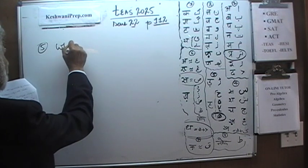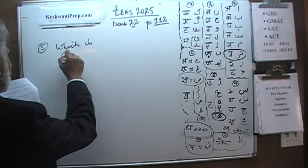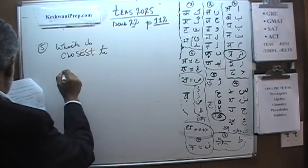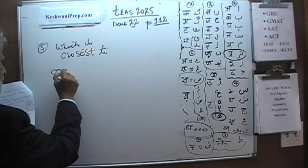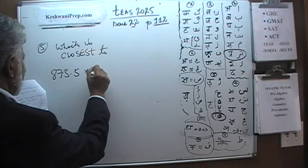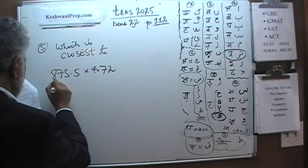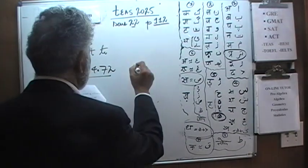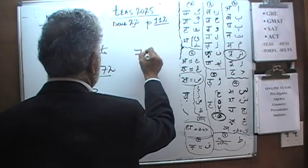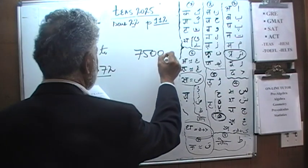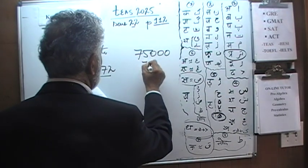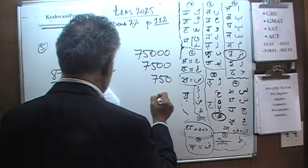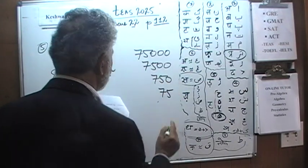Question five asks: which is closest to 873.5 × 4.72 ÷ 59.6? The answer choices are 75,000, 7,500, 750, or 75.